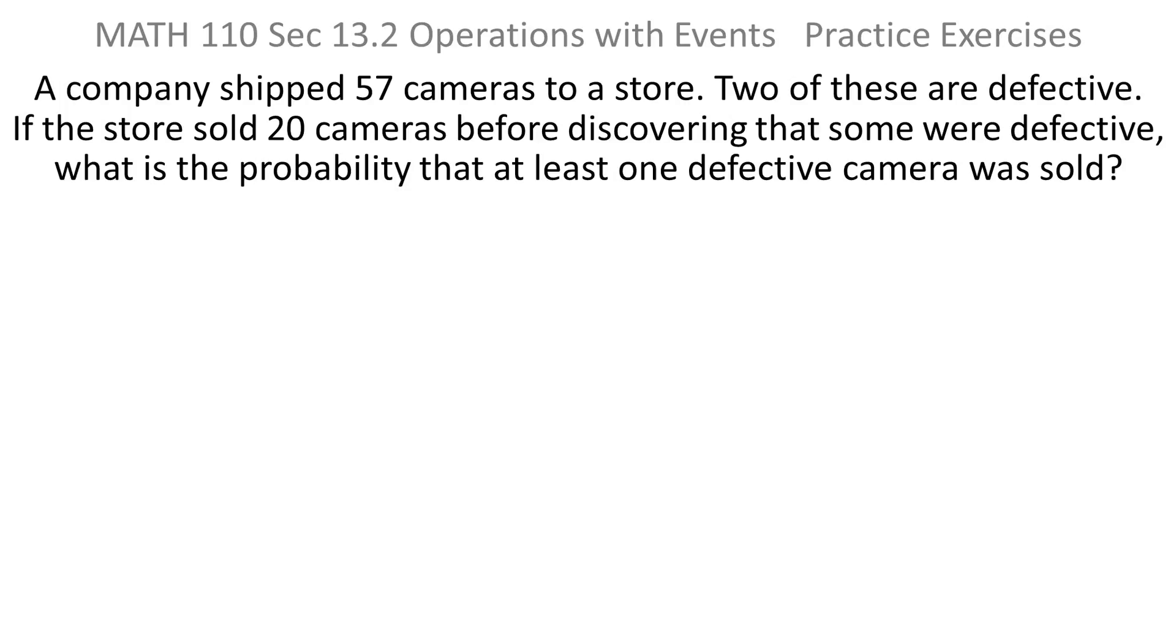A company shipped 57 cameras to a store. Two of these are defective. If the store sold 20 cameras before discovering that some were defective, what is the probability that at least one defective camera was sold?